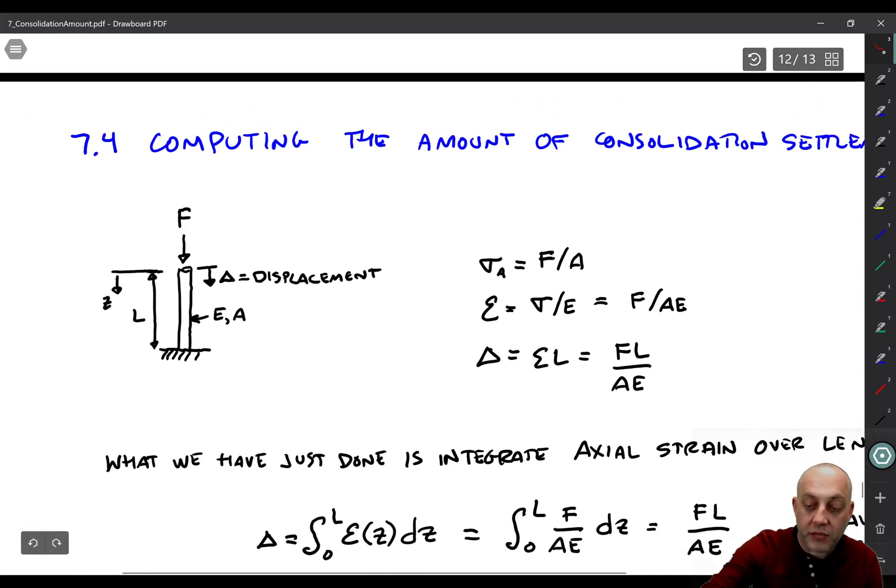So we know from strength of materials, the axial stress is F divided by A. The axial strain, based on Hooke's law, is sigma divided by Young's modulus. So we get sigma over E. And substituting in sigma, you get F over AE. I'm just going to erase F A because it's just vertical stress.